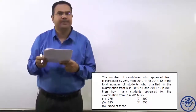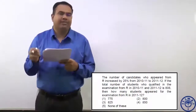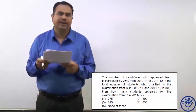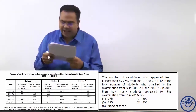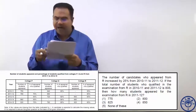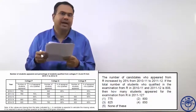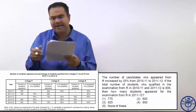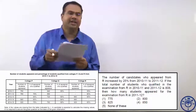Look at the table. In 2010-11, for college R, the number of students who appeared has increased by 25 percent from 2010-11 to 2011-12. The number of students appeared in 2010-11 is not given. The percentage of students qualified is 55 percent. In 2011-12, the number of students appeared again has a dash — the value is not given — and the percentage of students qualified is 60 percent. There is a relationship given here.